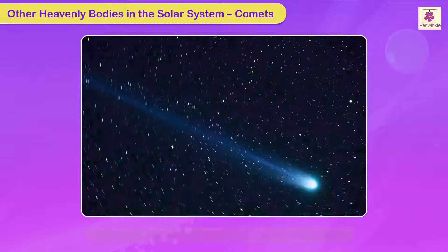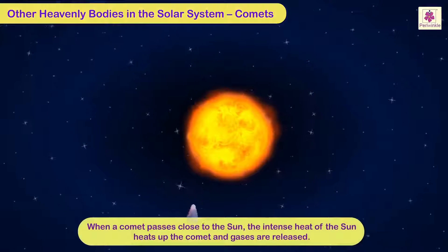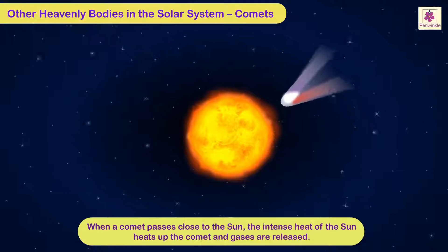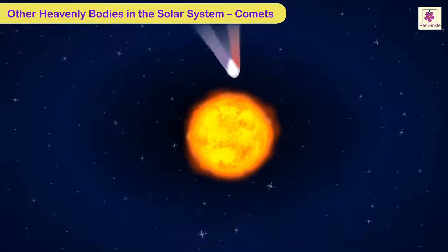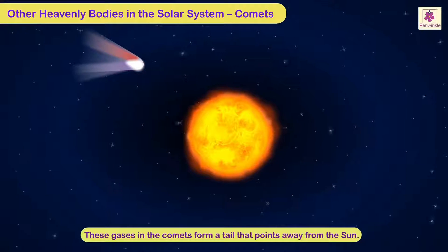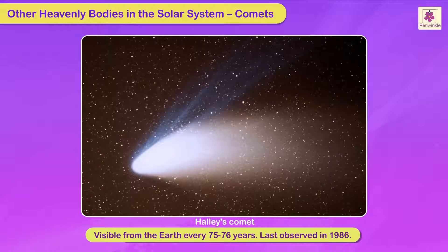Small bodies made of frozen gases, rock and dust are called comets. When a comet passes close to the Sun, the intense heat of the Sun heats up the comet and gases are released. These gases form a tail that points in the direction away from the Sun. The Halley's comet is visible from the Earth every 75 to 76 years and was last observed in 1986.